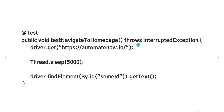You will also notice that this test throws an InterruptedException. This is the type of exception that can occur if another thread tries to interrupt the thread that our test is running on while it is sleeping. There is a way of handling this type of exception, as we're going to see next.